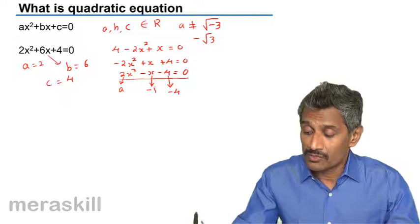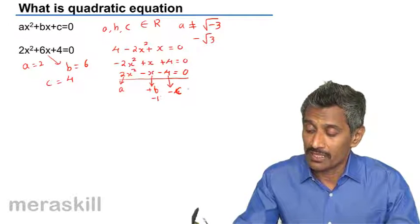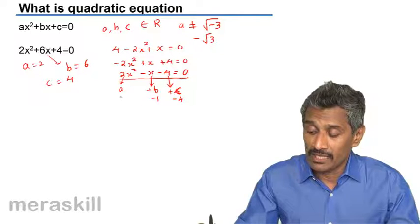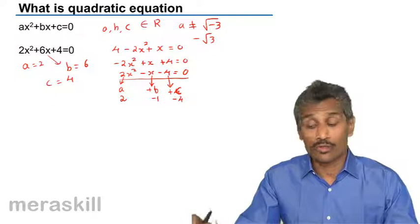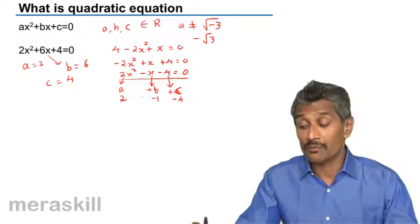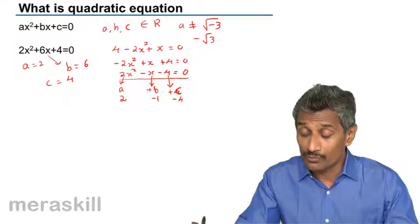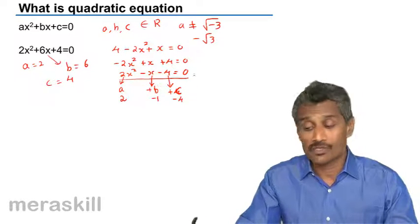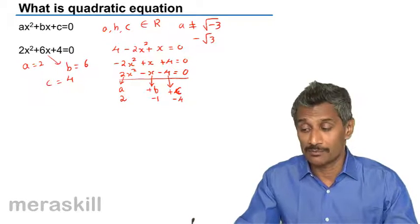So B is going to be minus 1, C is minus 4, and A is 2. This is what we need to understand about what the coefficients are, because the formulae involved for finding the roots would involve the coefficients of X squared, X, and the constant term.